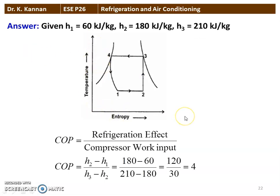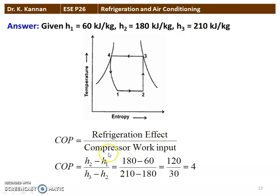Here again, in the ideal vapor compression cycle, 1 to 2 is the evaporator, 2 to 3 is the compressor, 3 to 4 is the condenser, and 4 to 1 is the expansion. Since throttling is a constant enthalpy process, H4 = H1 = 60 kJ/kg. H2 = 180 kJ/kg, H3 = 210 kJ/kg. COP = (H2 − H1) / (H3 − H2) = (180 − 60) / (210 − 180) = 120 / 30 = 4.